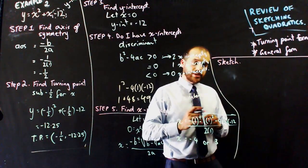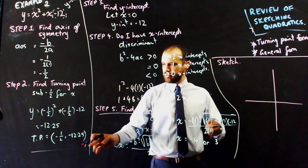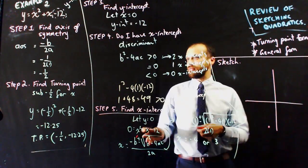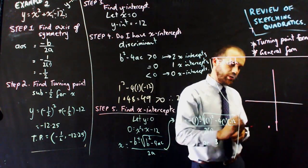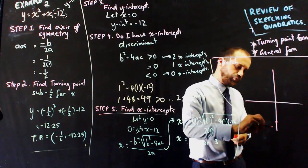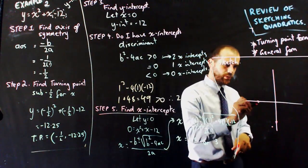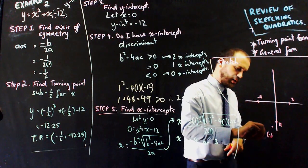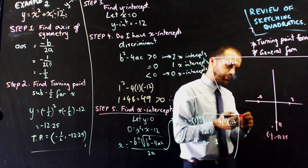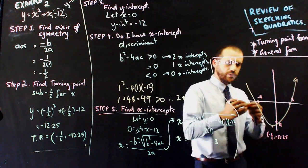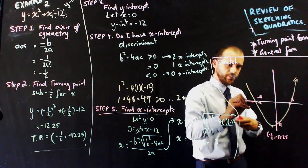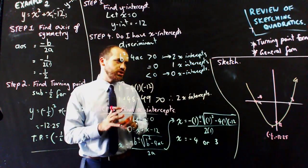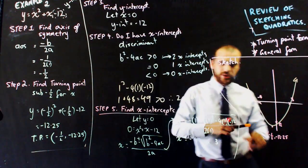Last step: sketch. Plot the Cartesian plane with a turning point of negative one half, negative 12.25, a y-intercept of negative 12, and x-intercepts of negative 4 and positive 3. Label all points and draw the parabola through them. That is a review of sketching quadratics using the turning point form and the general form — note the differences and similarities, and get to work.